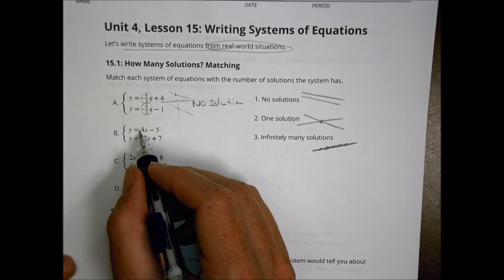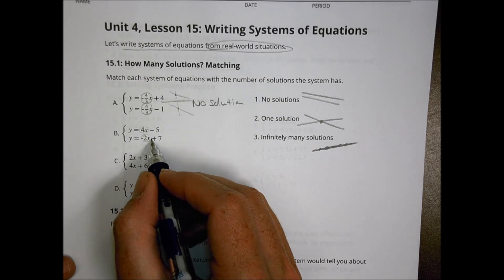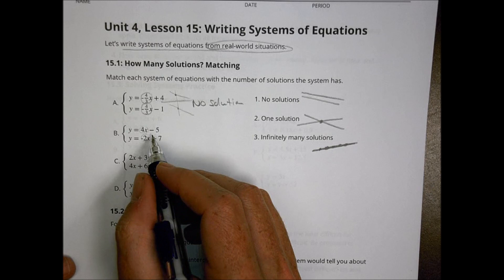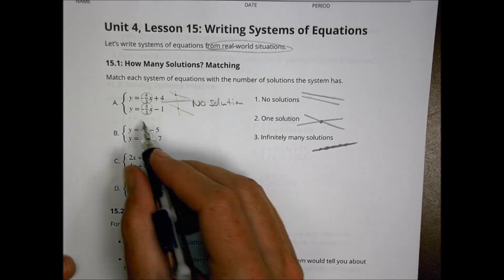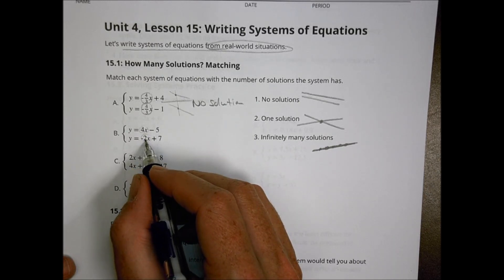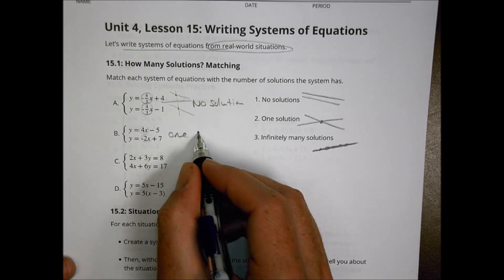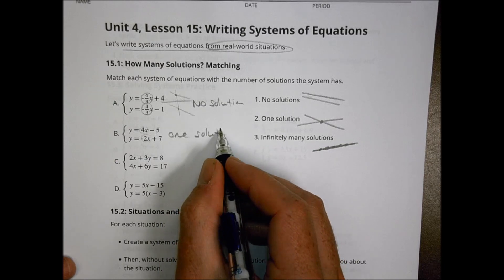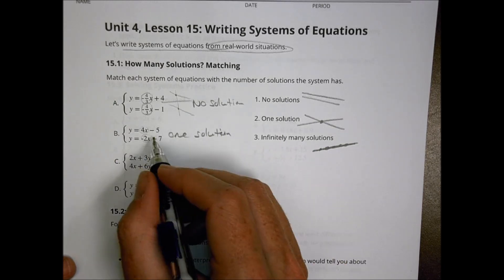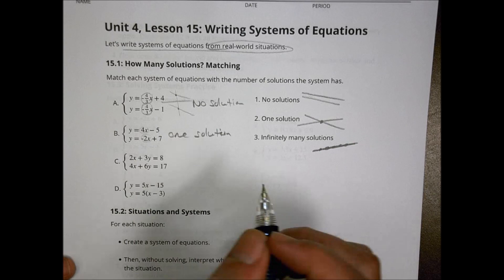For b, we have a slope of 4 and a slope of negative 2. So we have different slopes. Different slopes is a good thing. I also need to check to make sure it's not the same equation though. 4 divided by negative 2 is that, but negative 5 divided by negative 2 is not 7. This is going to be a one solution one because it has different slopes, and they also start different places too.